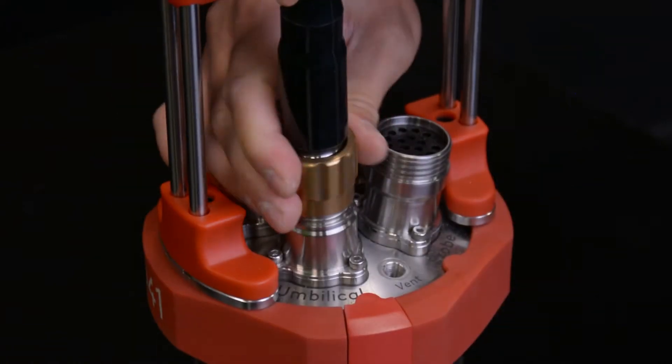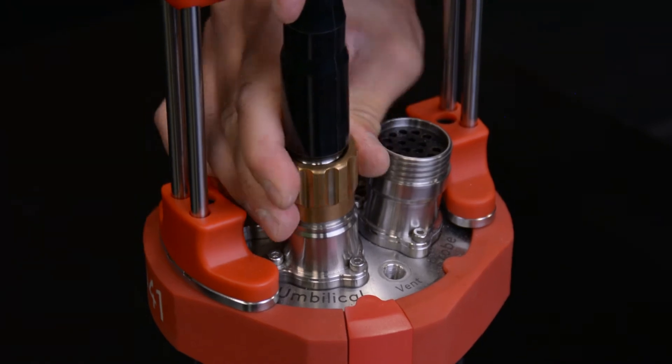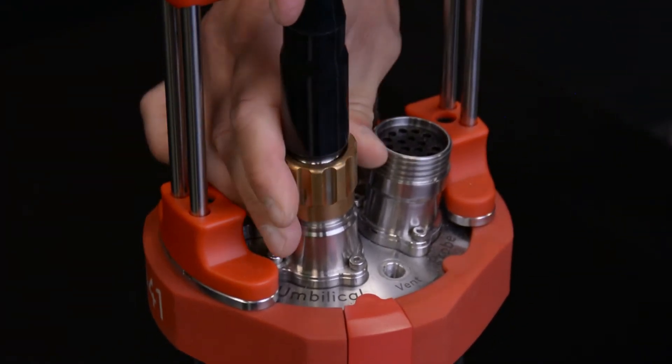As you screw the locking collar to tighten the connection, you may need to move the strain relief from side to side to allow the connector to be tightened fully.